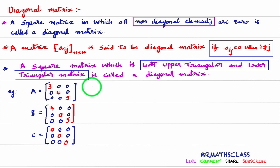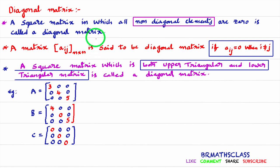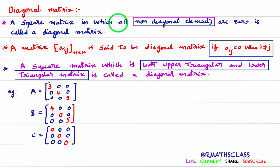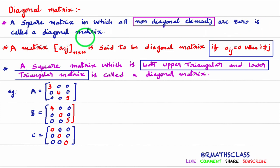What is the definition of Diagonal Matrix? We have three versions for the definition of a Diagonal Matrix. I have written all three versions here. In an examination, if they ask what is a Diagonal Matrix, you write any one of these three versions. First, we will try to understand what is a Diagonal Matrix. A square matrix in which all non-diagonal elements are 0 is called a Diagonal Matrix.